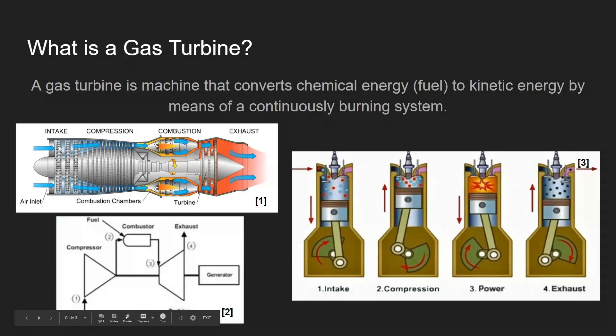A gas turbine is very different. It has discrete components that handle each part of the thermodynamic cycle: a unique intake system, followed by a discrete row of compressors, followed by a combustion system, and then an exhaust system. Because air is always passing through every section, the gas turbine is always lit — always burning — and this is what a continuously burning system means.